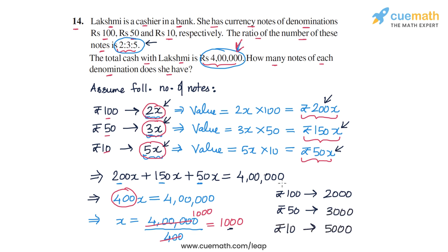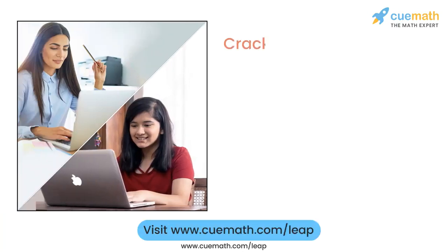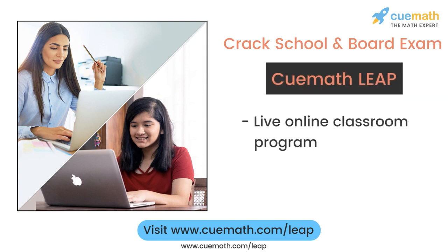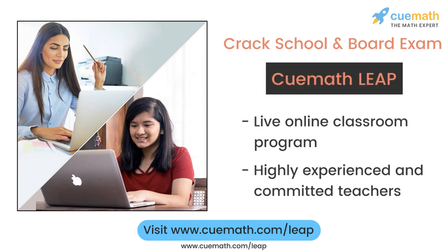So the answer to this question is that the notes of the three denominations are 2000, 3000, and 5000 in number. This completes question number 14. To learn more about how QMath can help you crack school and board exams, explore QMath Leap — a live online classroom program run by highly experienced and committed teachers.